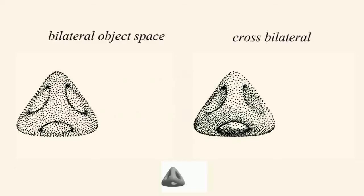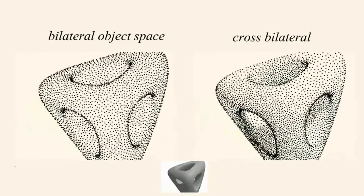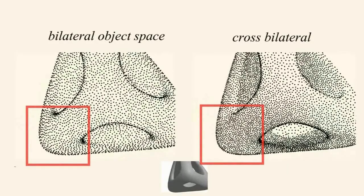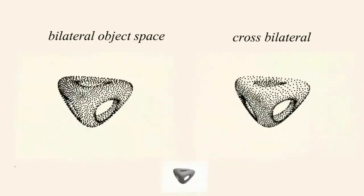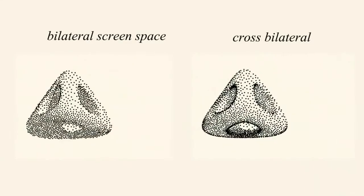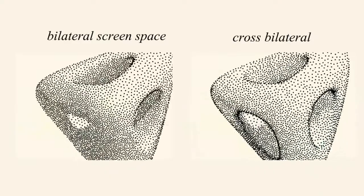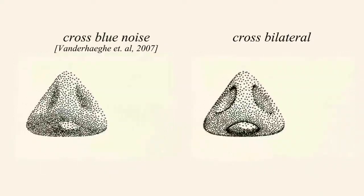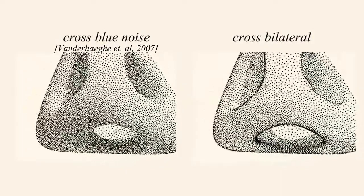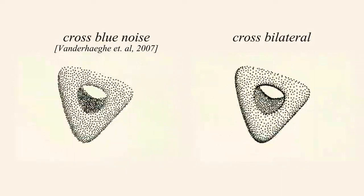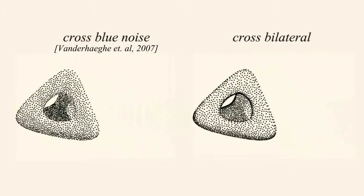Our method can also be applied to sampling dynamic domains. We provide cross-domain sampling for placing 2D screen-space samples corresponding to 3D objects. Pure geometry sampling in 3D space might not produce uniform 2D distributions, while pure image stippling in the 2D domain might produce shower door or other temporal artifacts. Our cross-domain sampling method places samples in the 2D domain while considering 3D geometry features, preserving both 2D and 3D properties well.